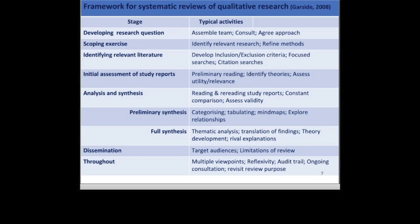The next slide shows a table which presents a framework for syntheses of qualitative research from a study I did in 2008. It shows the slightly different approaches to the different steps of systematic review for qualitative versus quantitative research. On the left-hand side, the different stages of review are described, and on the right-hand column, the typical activities that take place within those stages are listed. When thinking about developing a research question, it's common to have a much more consultative, team-led approach.